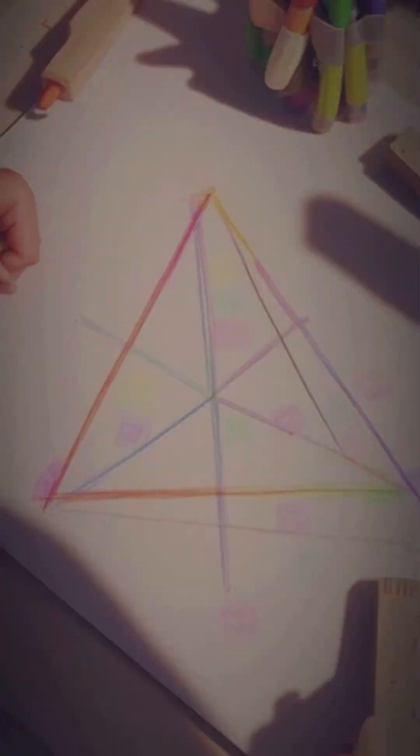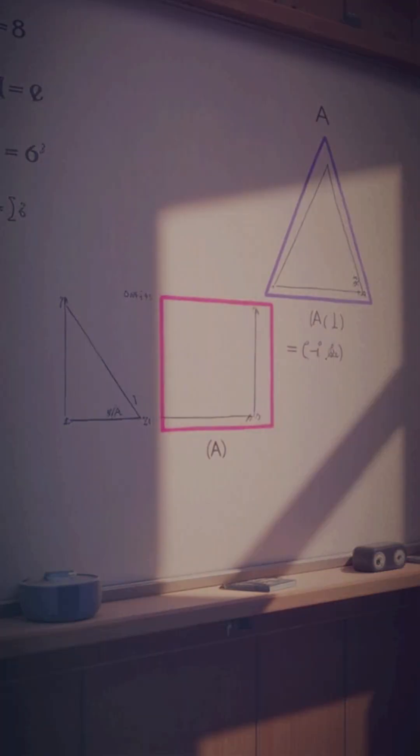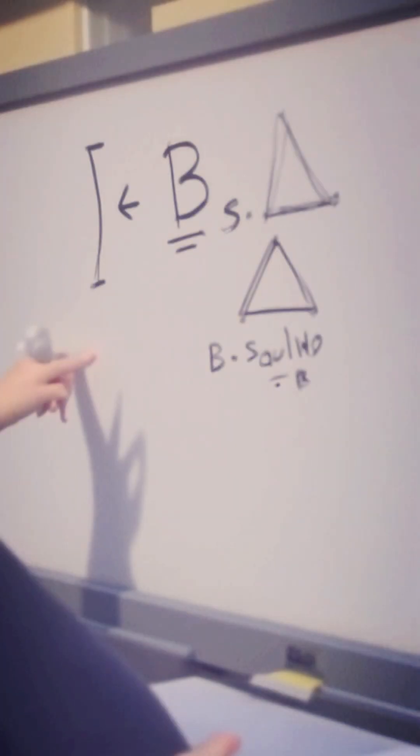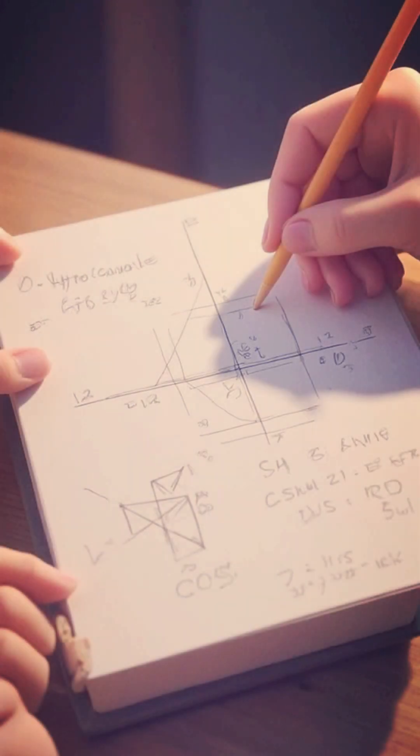Now, build squares on each side. Area on side A is A square. Area on side B is B square. Area on side C is C square.